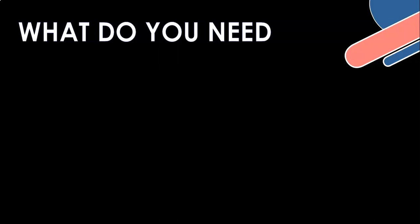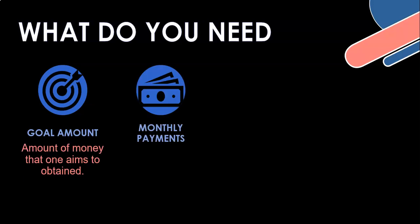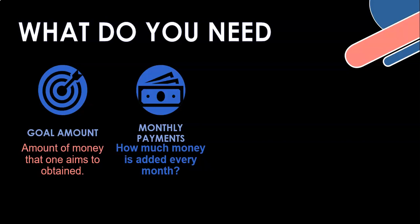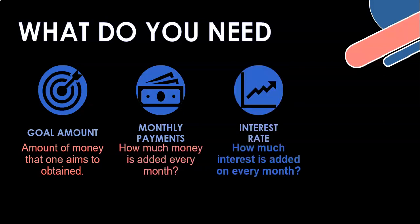Instead of knowing how many times to do the loop, I've got a goal to reach. So the first thing I need is the goal amount - how much money do you want to save? Maybe there's a trip you want to go overseas and you know how much money you want to save, so you want to look at how long it's going to take you to get to that goal. We're going to be able to pay money into the bank every month, so we can add money to the bank.